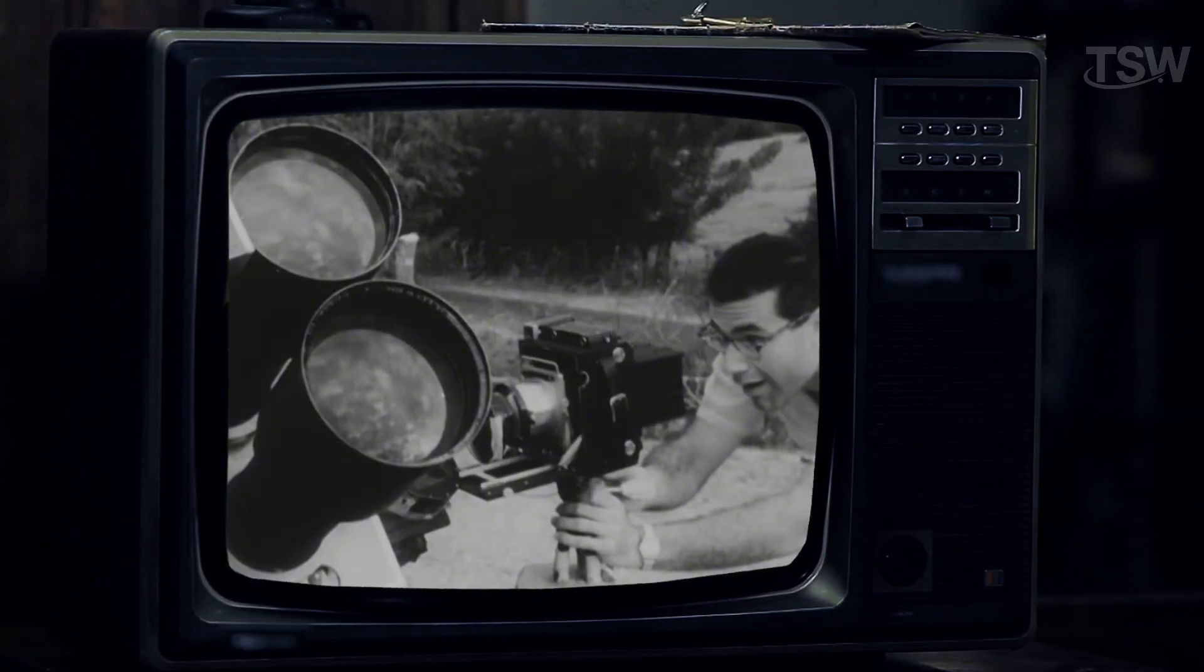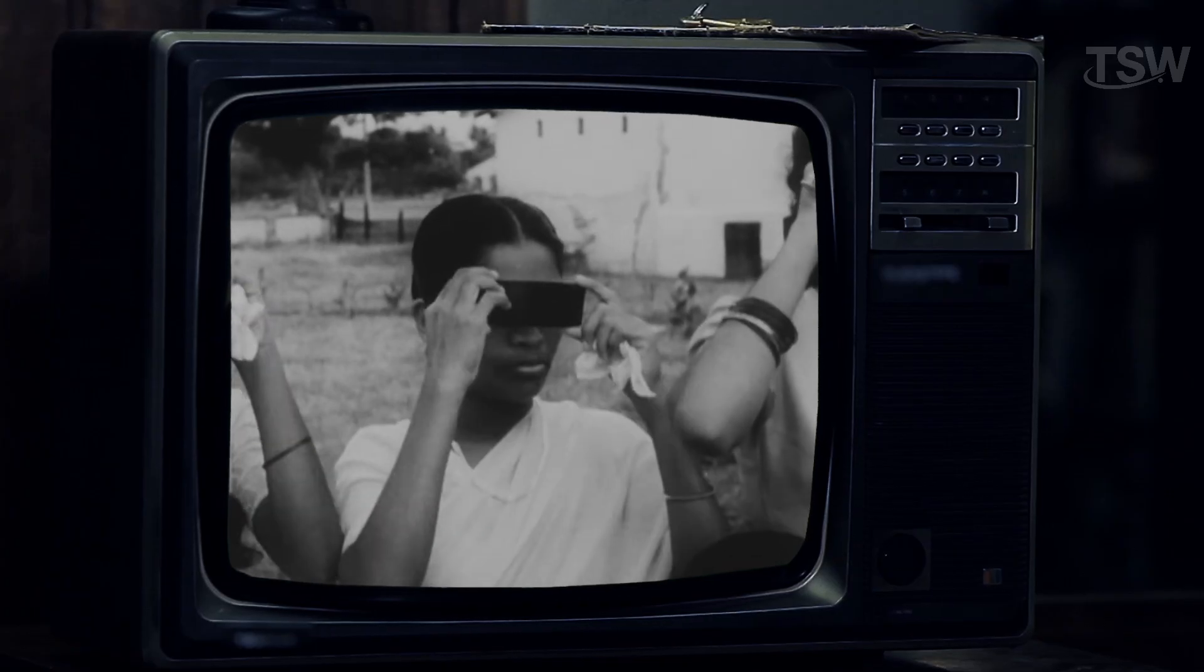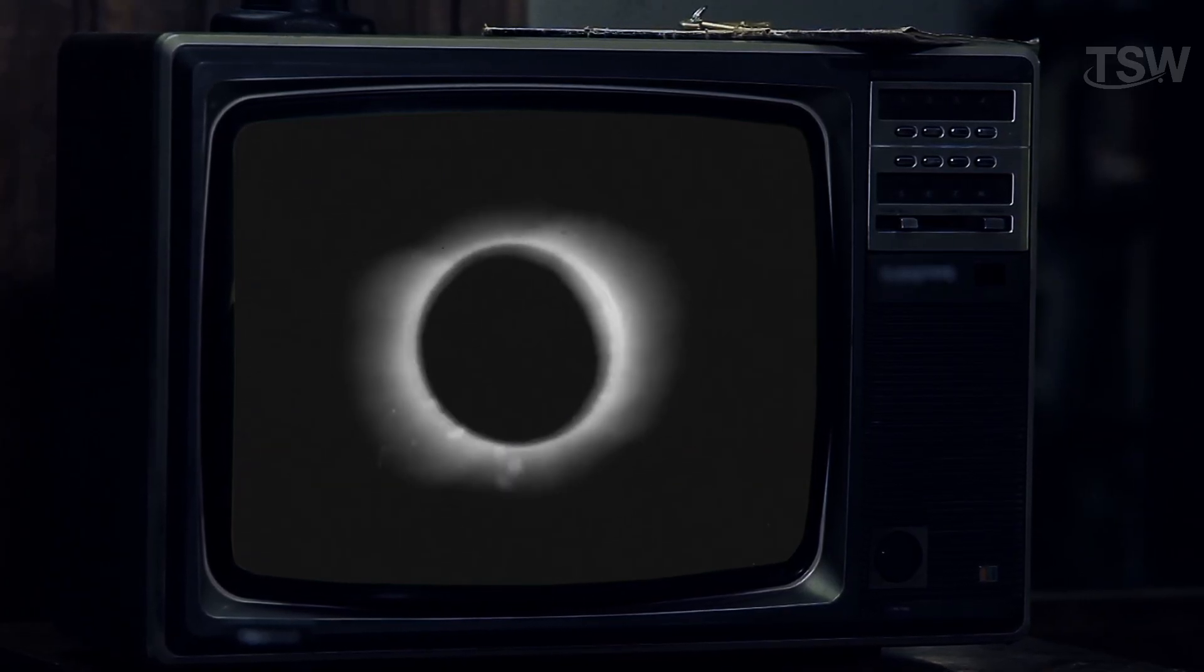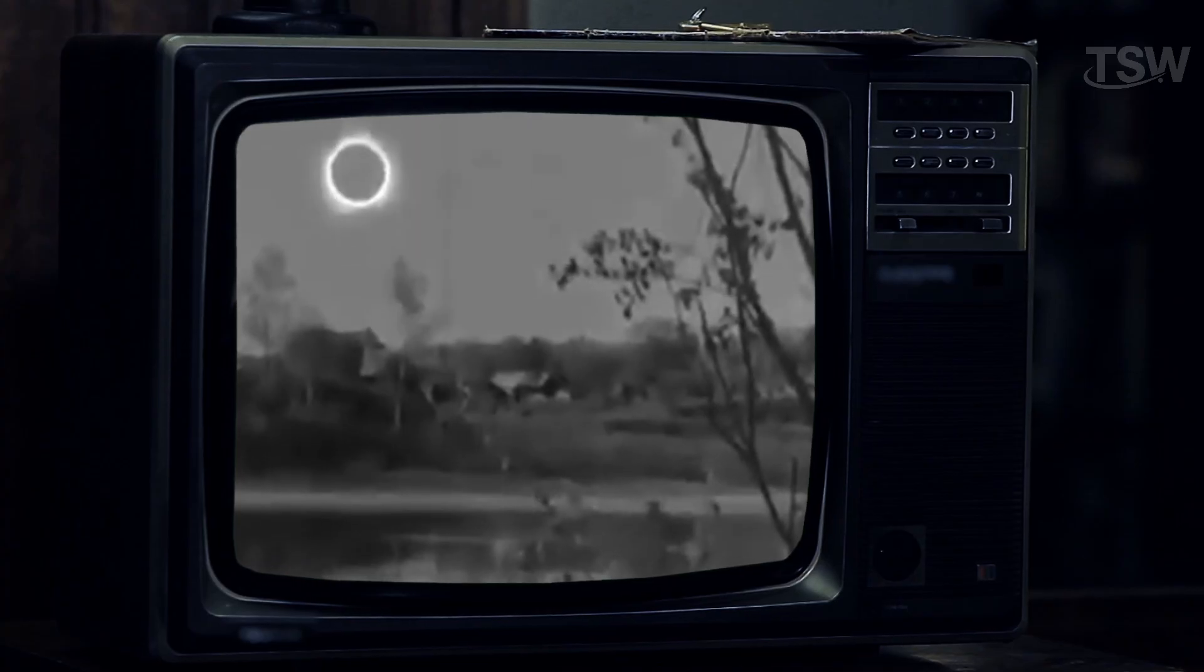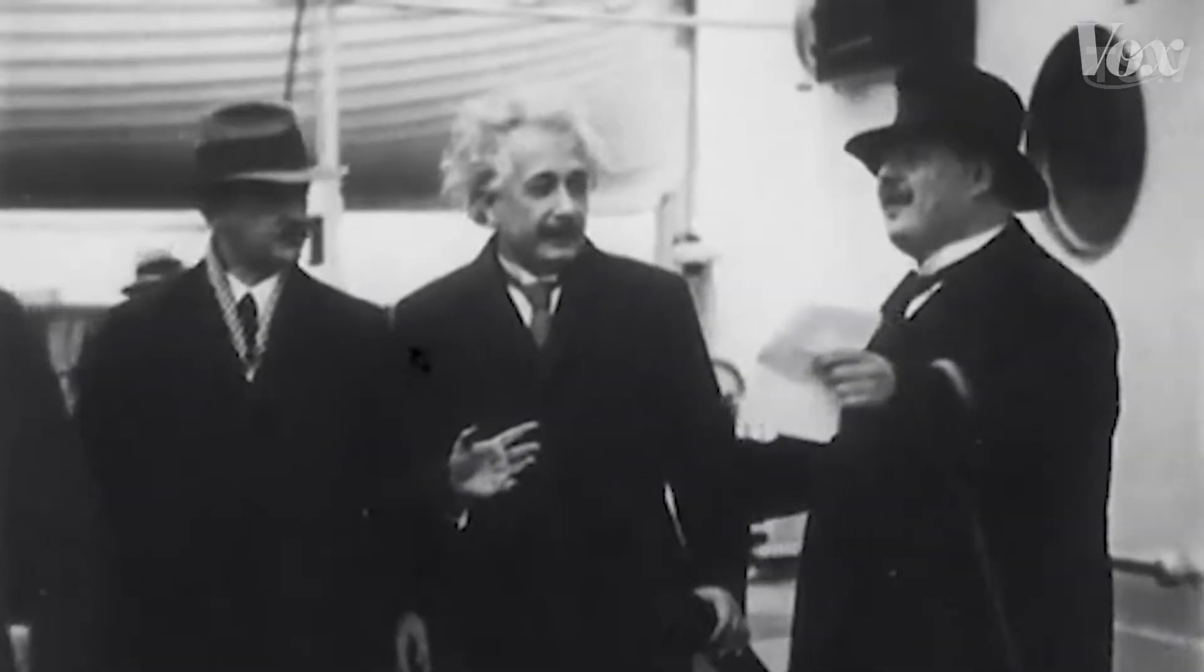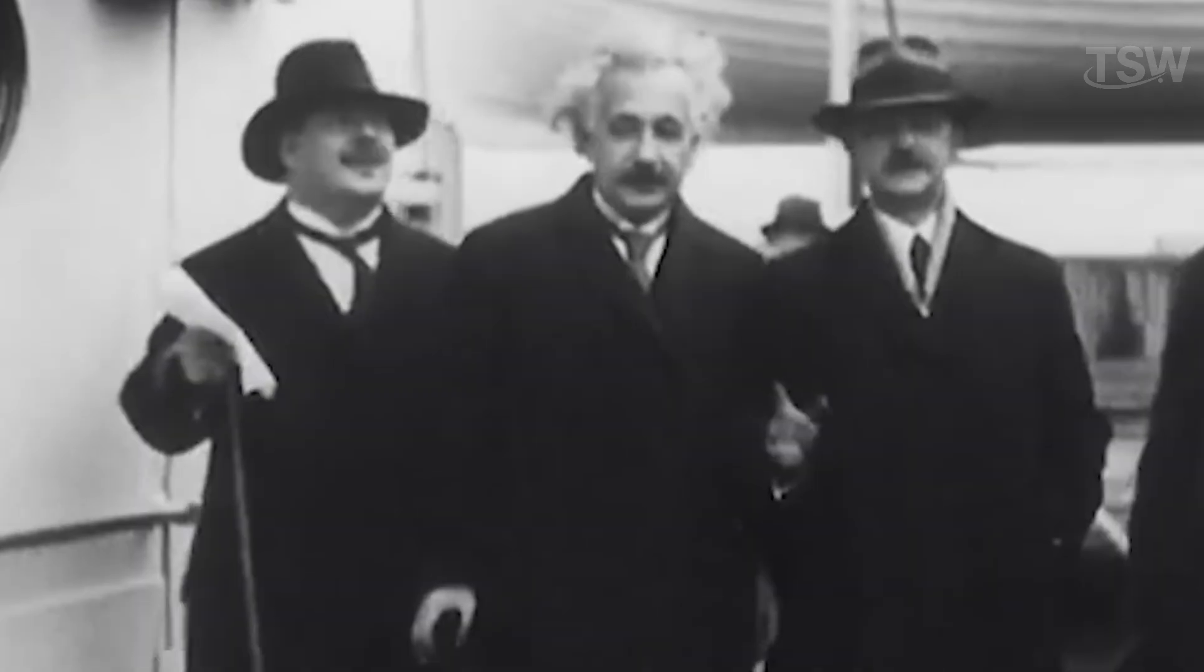To test that prediction, one of the most important scientific expeditions of the 20th century was organized. The total solar eclipse on May 29, 1919 was the perfect opportunity. British astronomers, led by Frank Dyson and Arthur Eddington, planned two missions.